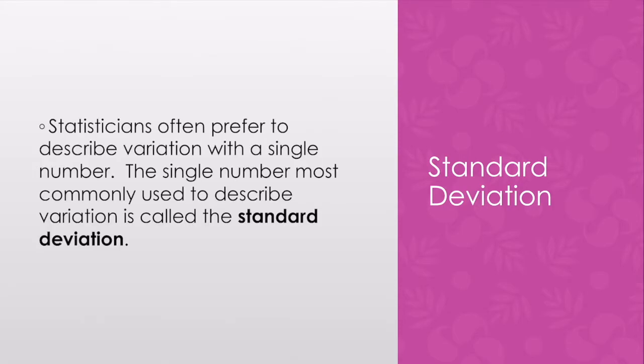Statisticians use standard deviation to describe variation with a single number. This is a really important number for statisticians. It's most commonly used to describe the variation. Remember variation is the difference in our data values.